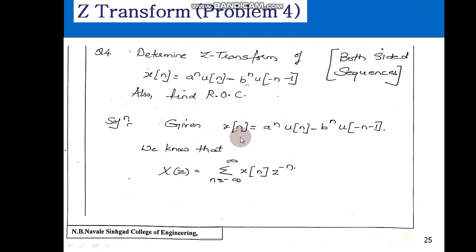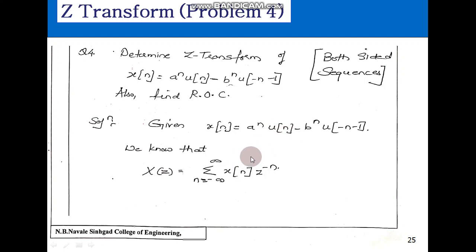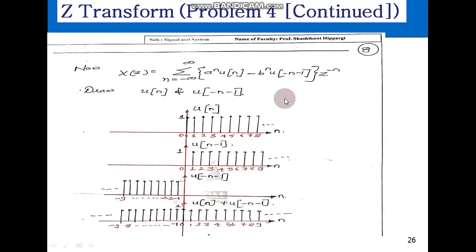Given is x(n). The formula is X(z) equal to the sum from n equal to minus infinity to plus infinity of x(n) z to the power of minus n. Now we will replace x(n) by the given value: a raised to n u(n) minus b raised to n u of minus n minus 1.